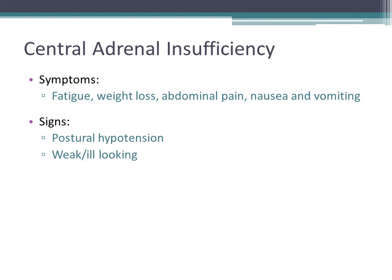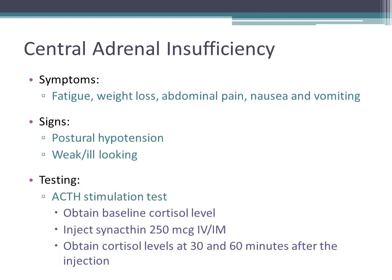People can have postural hypotension, which you can check in the clinic, and they look weak and ill. For testing, we perform the ACTH stimulation test: obtain a baseline cortisol level, then inject synacthen — recombinant ACTH — 250 micrograms IV or IM, and obtain cortisol levels at 30 and 60 minutes after injection.